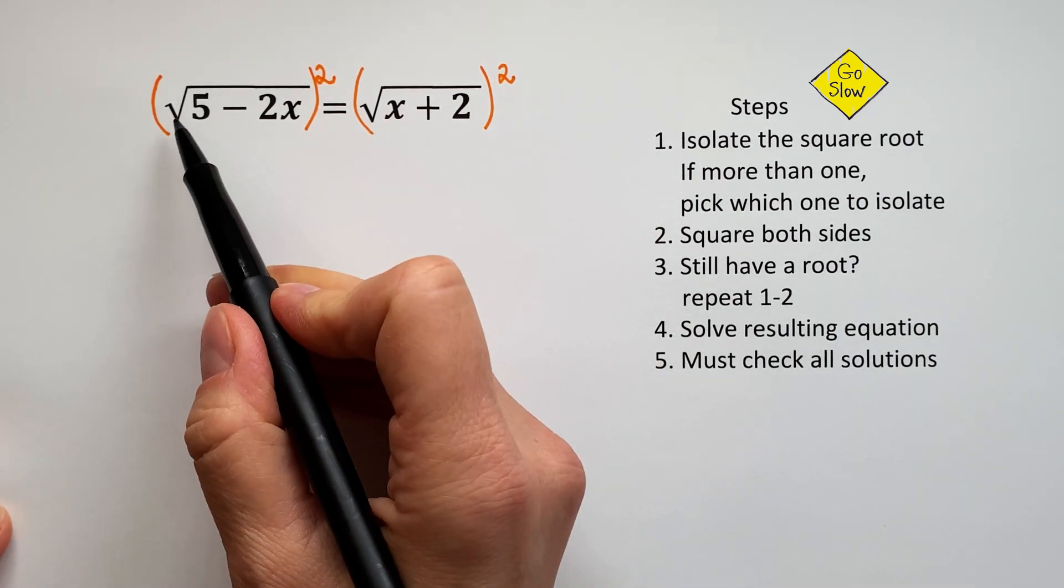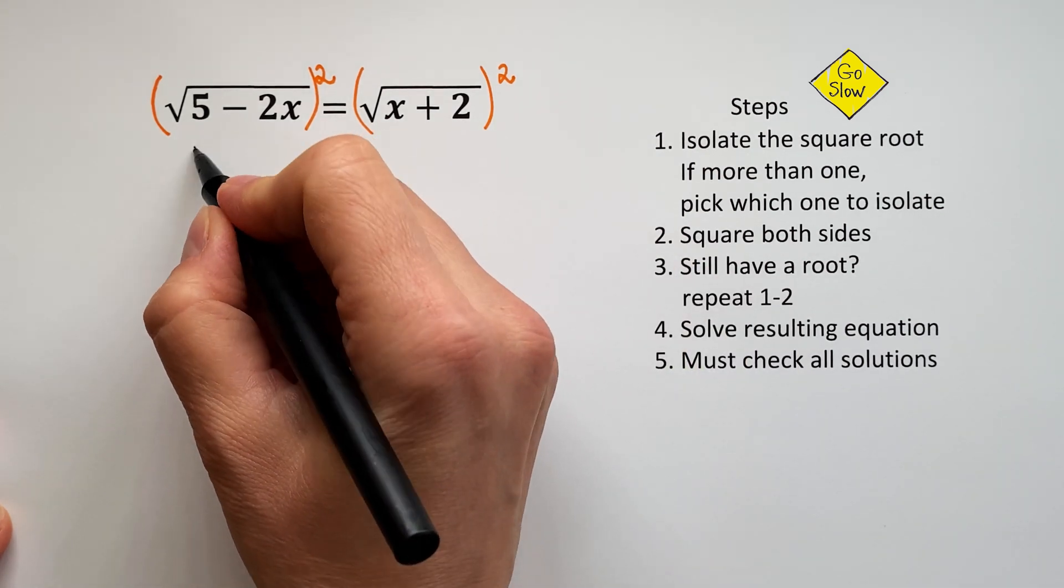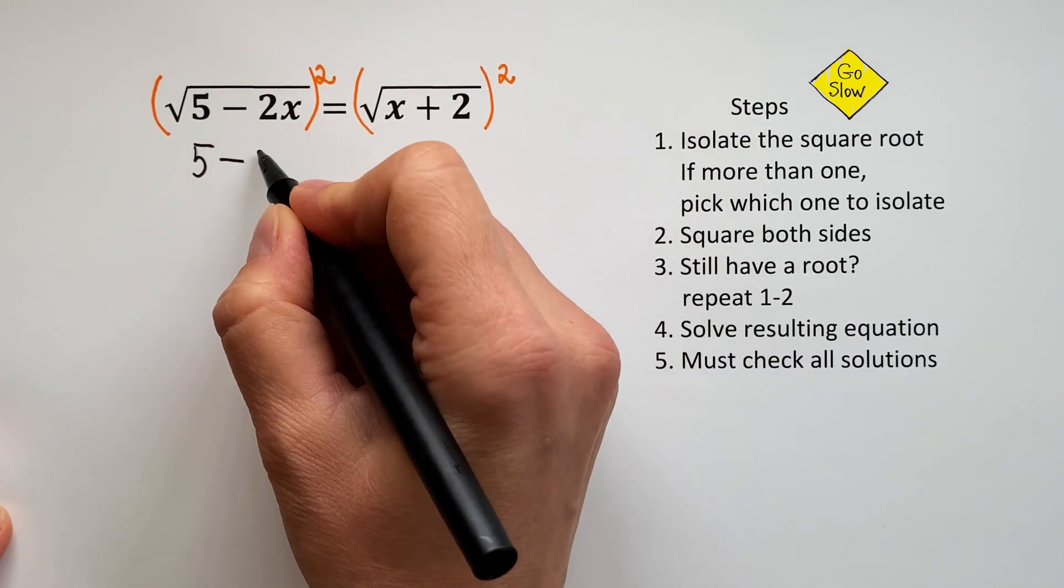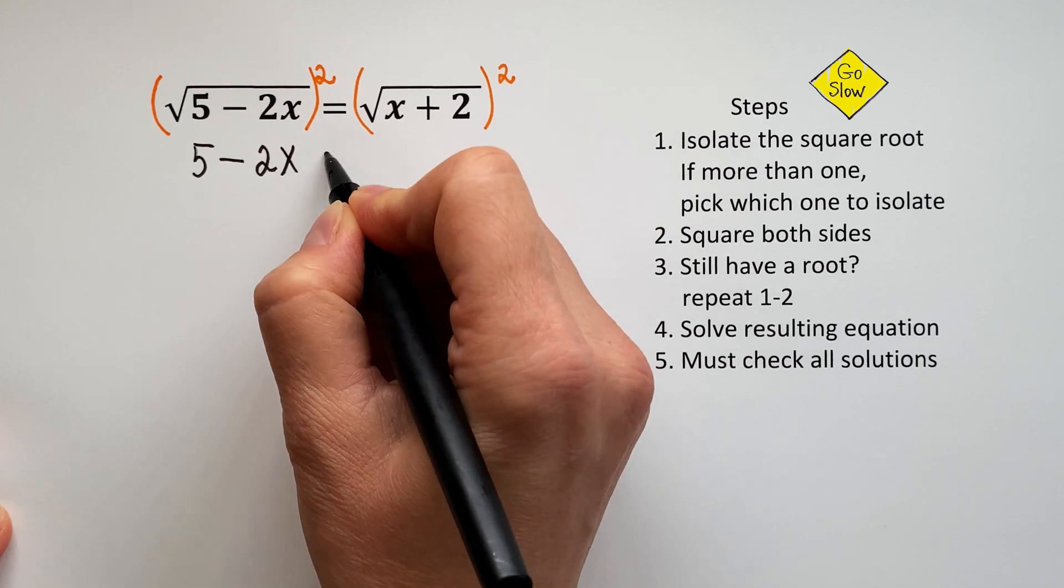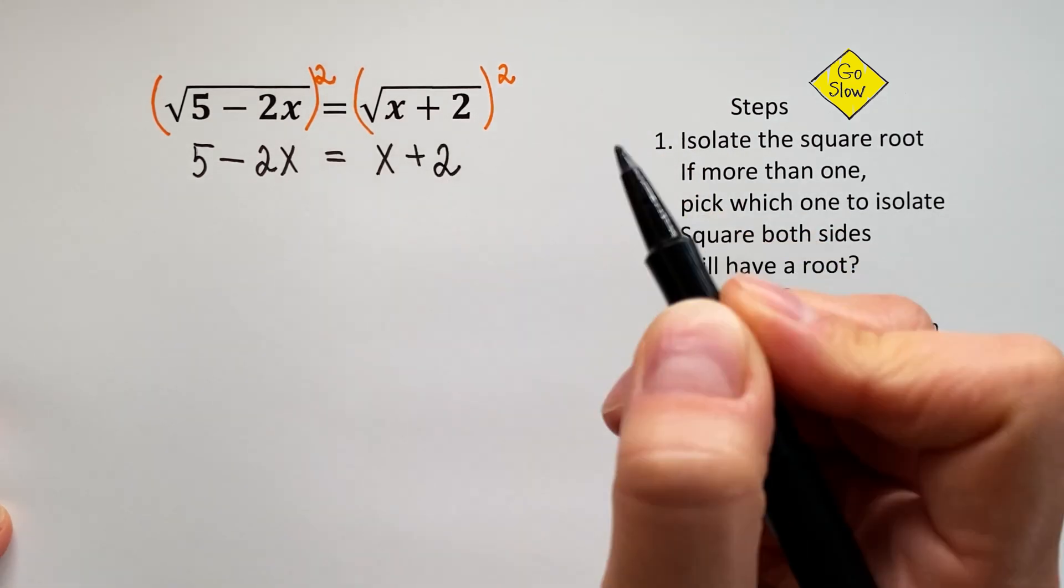So when you square the square root, you get the expression underneath. So we will have 5 minus 2X equals X plus 2. Fantastic! I love it!